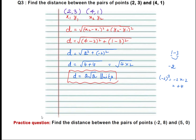You have practice questions: find the distance between the pair of points (minus 2, 8) and (5, 0), and also (6, 4) and (8, 2). Write down the points and name them as x1, y1, x2, y2. The distance formula is d equals square root of (x2 minus x1) whole squared plus (y2 minus y1) whole squared. Substitute the values of x1, y1, x2, y2 and simplify to get the distance.